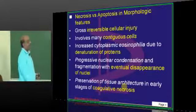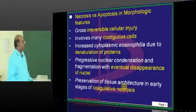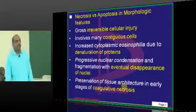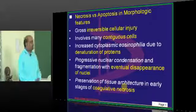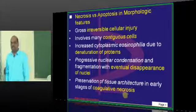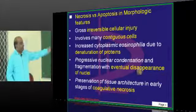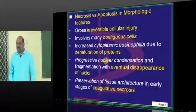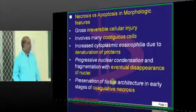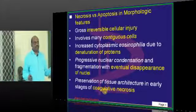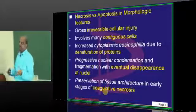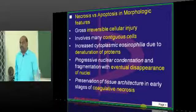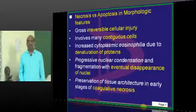Necrosis versus apoptosis in morphology — what are the main differences? Necrosis is an irreversible cellular injury; contiguous cells are basically injured. There will be cytoplasmic eosinophilia with denaturation of proteins, which is a feature of necrosis, not apoptosis. Disappearance of nuclei occurs. In coagulative necrosis, tissue architecture is typically preserved — a feature of necrosis but not apoptosis.